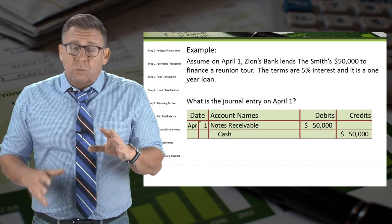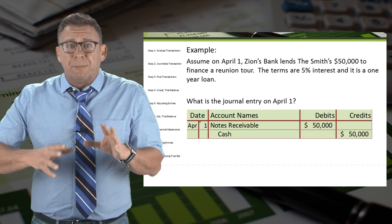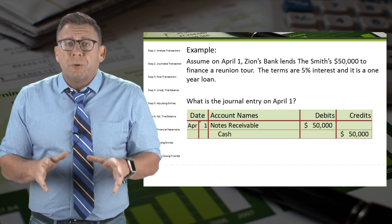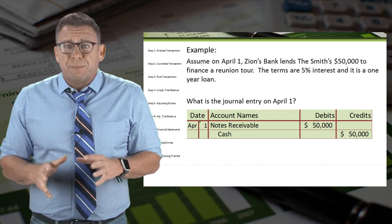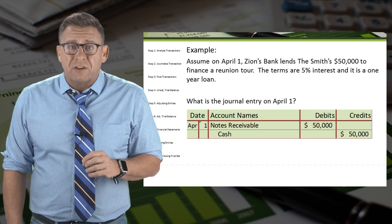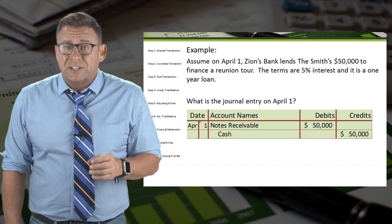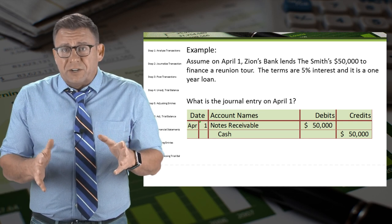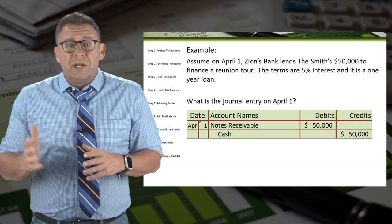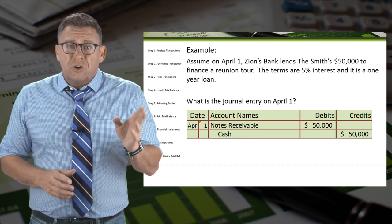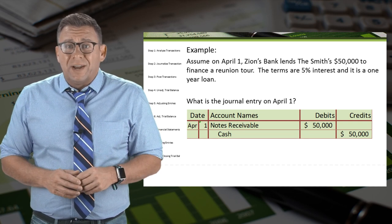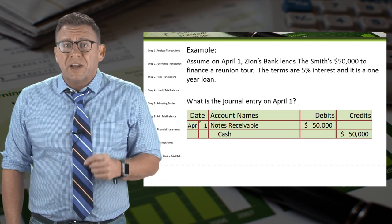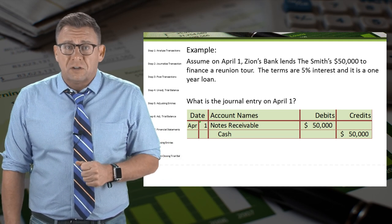Let's look at one more common type of accrued revenue example. Assume on April 1, Zions Bank lends the Smiths $50,000 to finance a reunion tour. The terms are 5% interest and this is a one-year loan. The journal entry on April 1 is a debit to notes receivable and a credit to cash for $50,000.